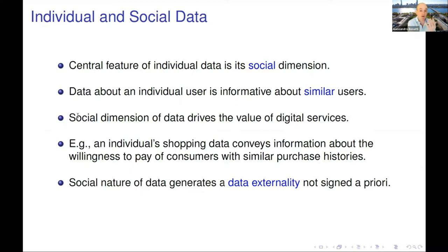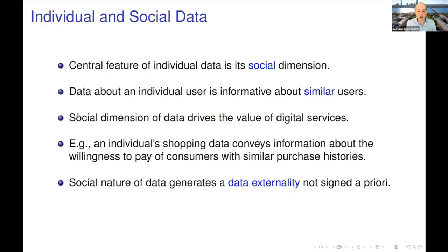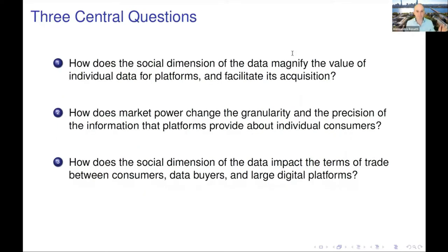The point of this paper is that the social nature of the data — or the correlation in types — generates a data externality that is not signed a priori. This is not like pollution or climate change. Whether the information that Google learns about me from you benefits or hurts me will depend on what problem I'm trying to solve and how Google uses that data. Within this growing literature, we ask three central questions. The first: how does the social dimension of data facilitate its acquisition by a large player?